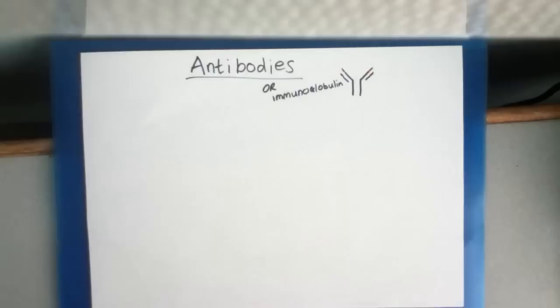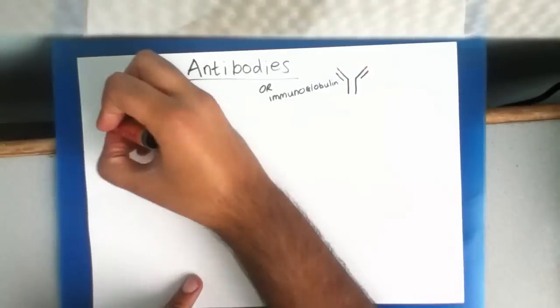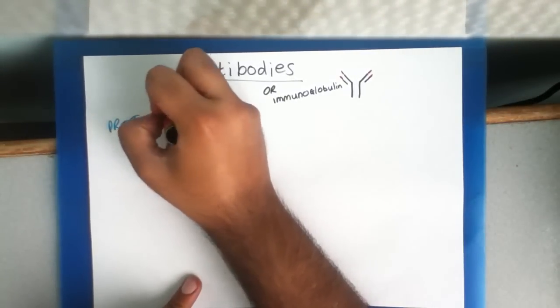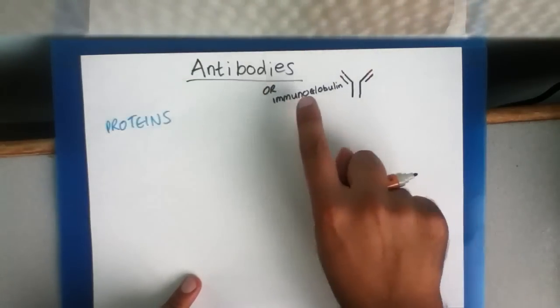In today's video we're going to discuss antibodies as quickly as possible and in as much detail as we can. So antibodies are proteins, and another name for them is immunoglobulin.